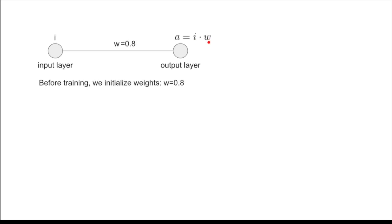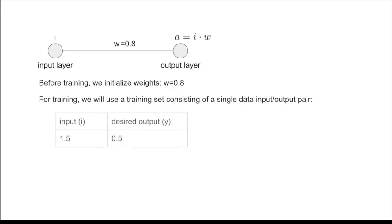We randomly initialize the weight to 0.8, and we have a simple training data set consisting of an input 1.5 and desired output 0.5. So, with i being 1.5, we would like this network to produce the value 0.5.